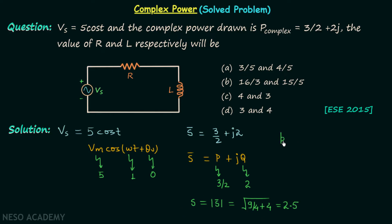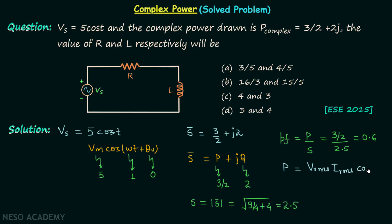The power factor equals real power divided by apparent power, so power factor = (3/2) / 2.5 = 0.6. The average power delivered by the source is P = Vrms × Irms × cosθ, where cosθ is the power factor. Since Vm = 5, Vrms = 5/√2. Therefore: 3/2 = (5/√2) × Irms × 0.6.